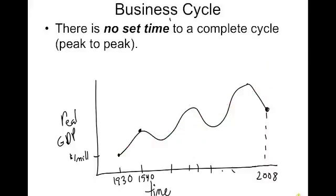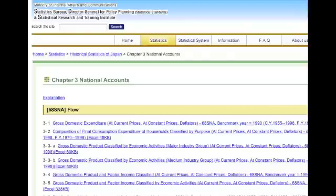It's important to note that there's no set time to complete a cycle — it's not exactly three years or exactly ten years. The cycles are quite erratic and unpredictable. You never really know what is going to happen. If you could figure out exactly when the trough or peak is going to hit, you could become exceedingly rich playing the stock market.